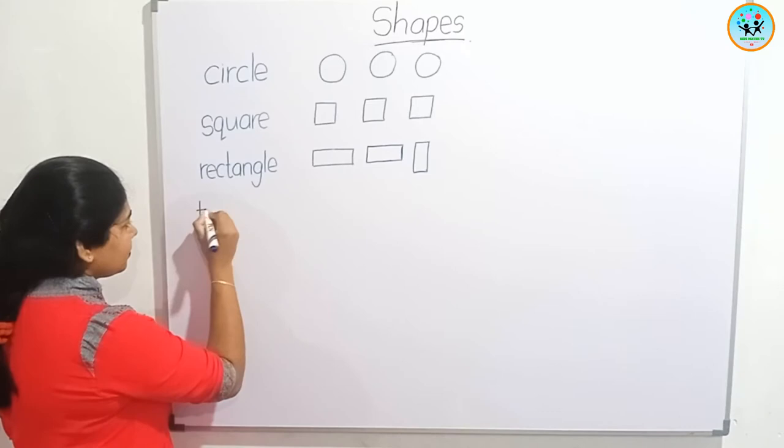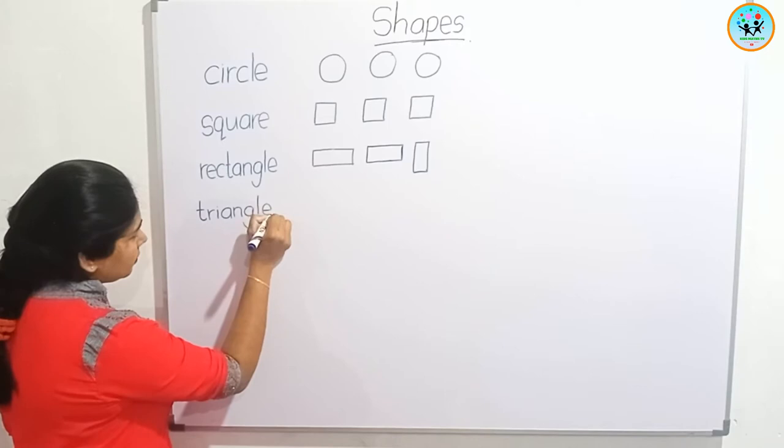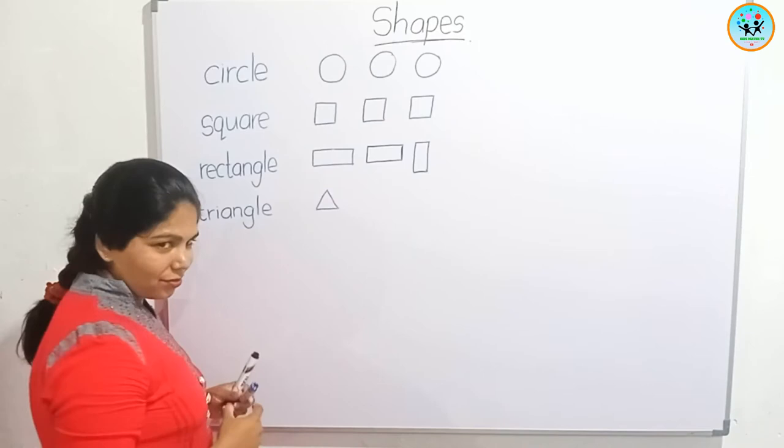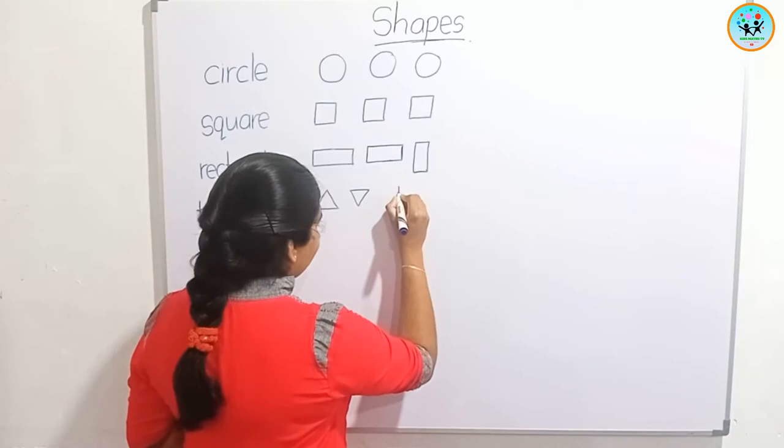Let's draw a triangle. Like this. How many sides are here? One, two, three — three sides are here. This is also called a triangle. We can draw it like this.